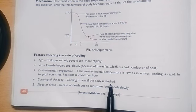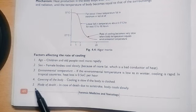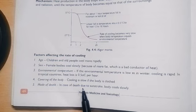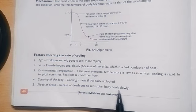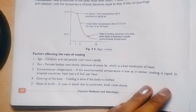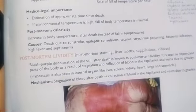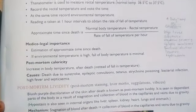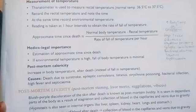Covering of the body - cooling is slow if the body is covered. Mode of death - in case of death due to sunstroke, body cools slowly.